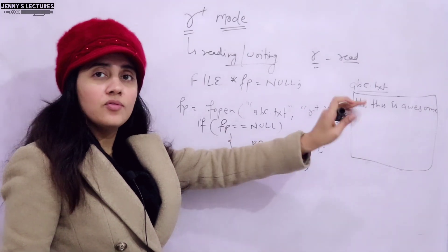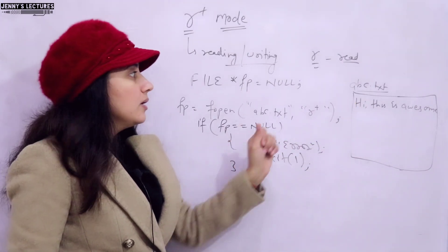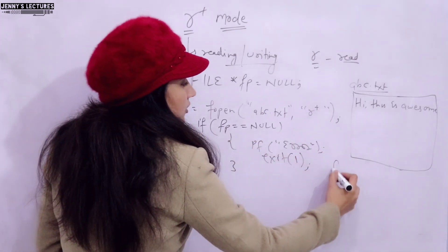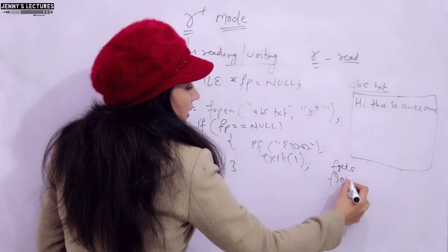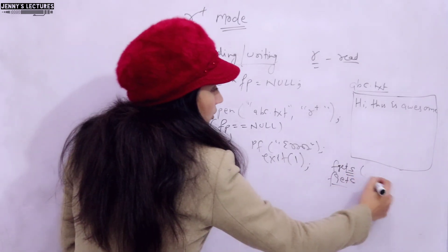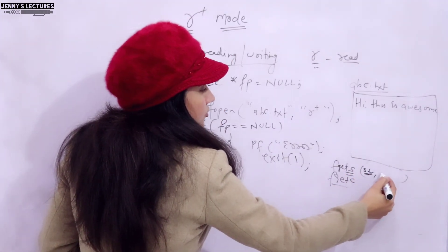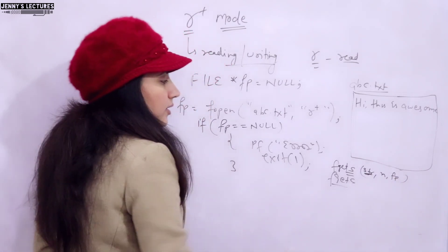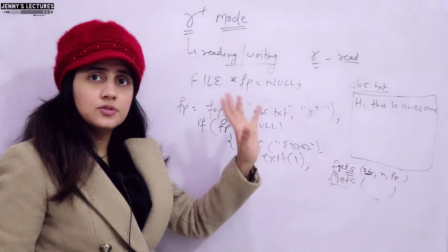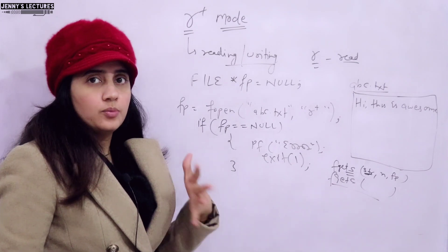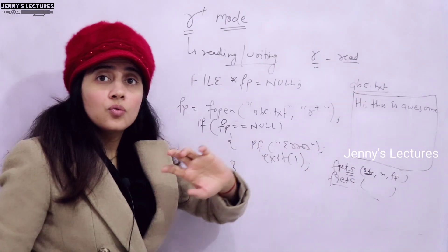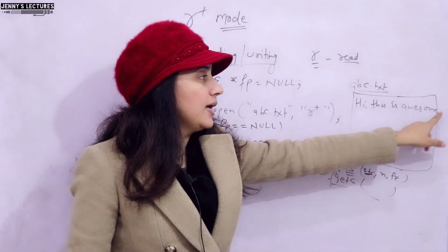Once the file is opened, you can read from it and write to it — the main purpose is reading. To read, use fgets to read a complete string by providing the string, its length, and the file pointer. Or use fgetc to read character by character. We discussed both these functions in previous videos.